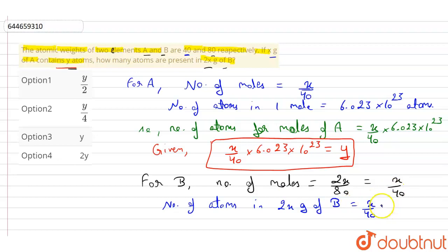x by 40 times 6.023 times 10 to the power 23, and this value equals...